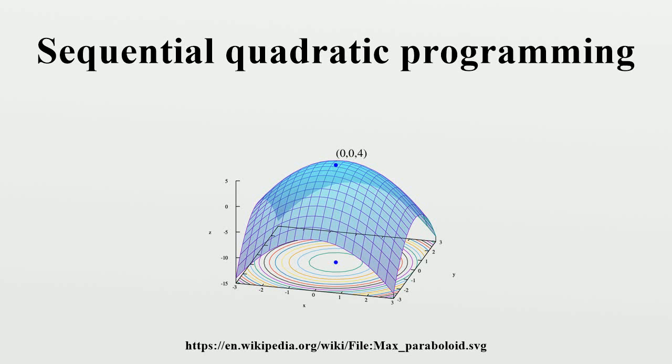Sequential quadratic programming is an iterative method for nonlinear optimization. SQP methods are used on problems for which the objective function and the constraints are twice continuously differentiable.